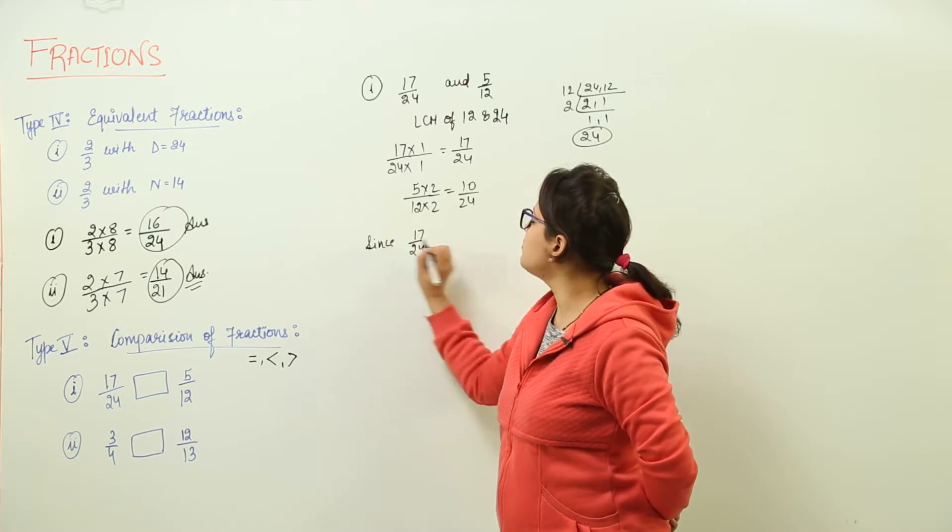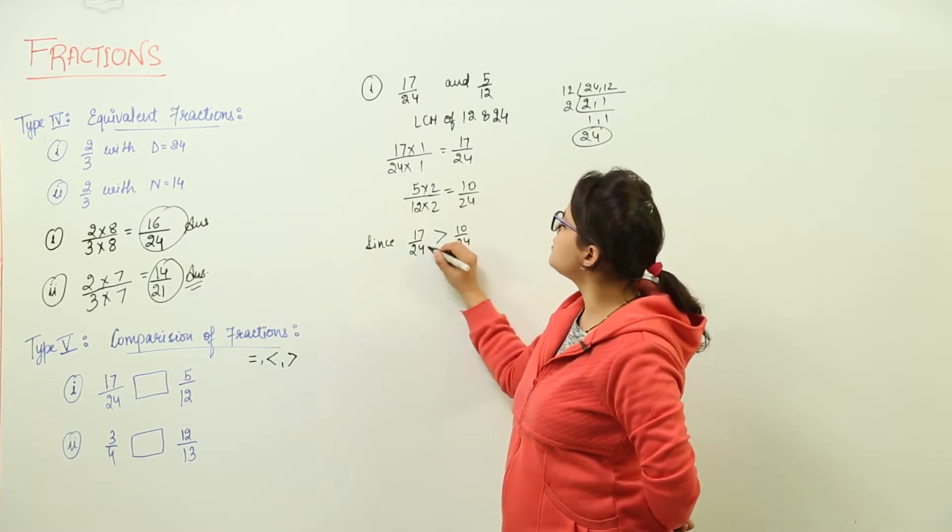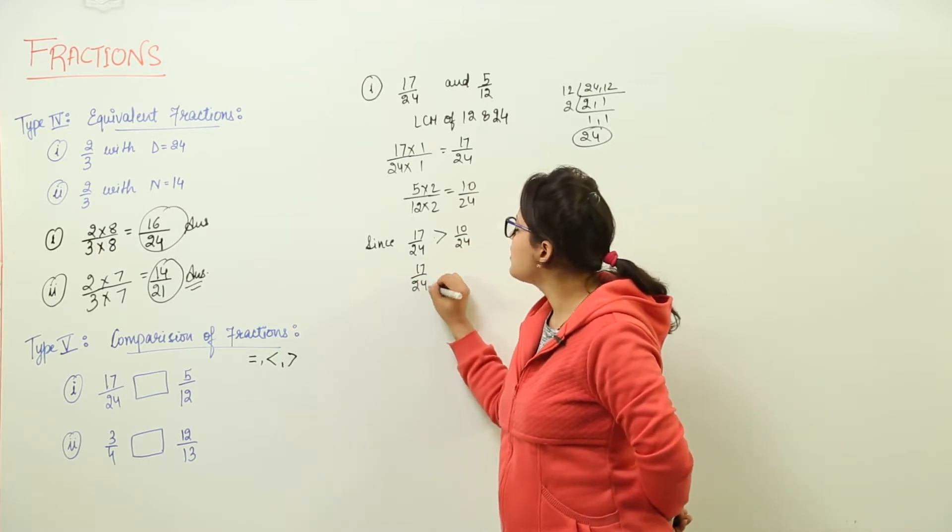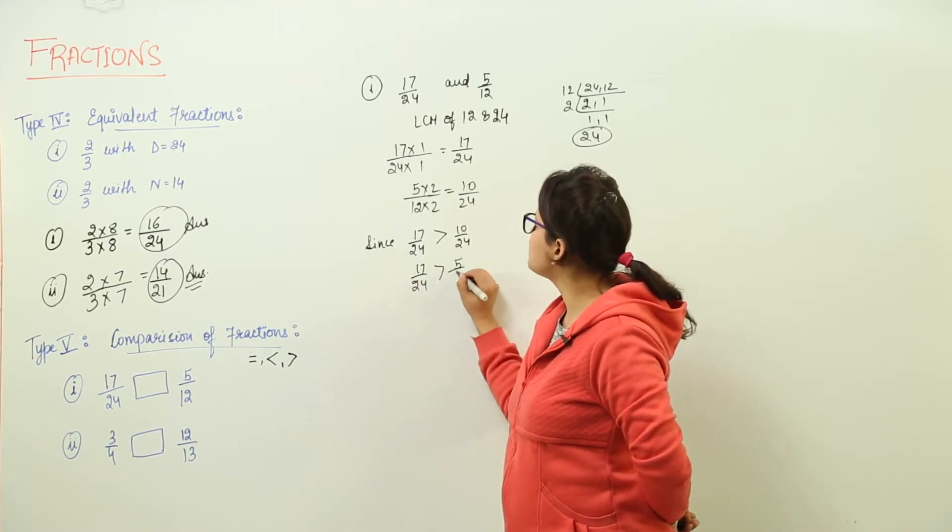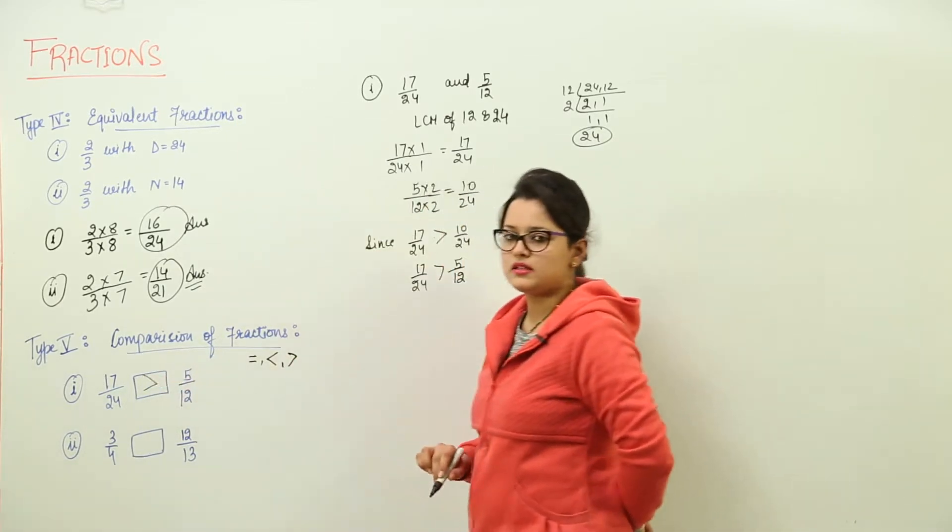Since the 17 upon 24 is greater than 10 upon 24, that means the original fraction for this was this only. But the original fraction for this was 5 upon 12. So what will be the sign coming over here? It will be the greater than sign.